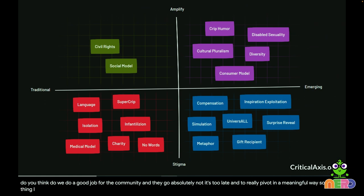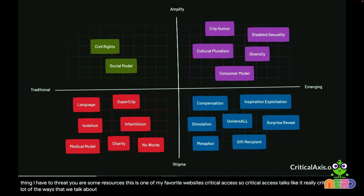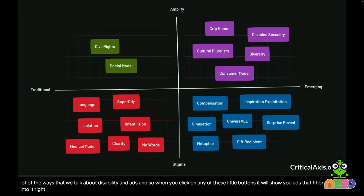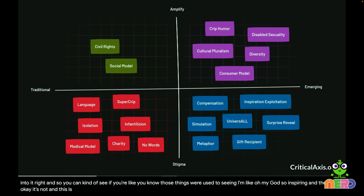Here are some resources. One of my favorites is Critical Access — it really critiques the way we talk about disability in ads. You click buttons and it shows you ads that do or don't meet certain standards, categorizing things like 'the surprise reveal' and 'gift recipient' tropes. For example: an athlete with cerebral palsy got a contract announced via surprise film crew after a race. When other athletes get contracts, does it ever look like that? A scheduled meeting with lawyers — not a surprise camera. He also wasn't allowed to speak; they spoke over him. This site helps you start thinking about disability in a different way.